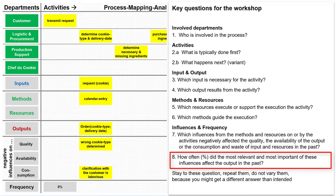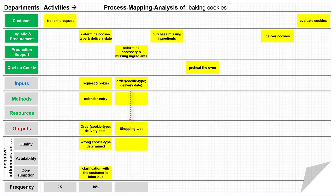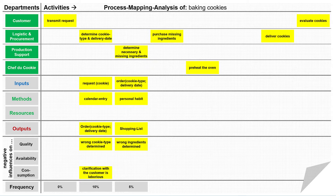I ask the last question for this activity: how often did the most relevant of these influences affect the output in the past? Participants estimate the frequency of clarifying a request at 10% of cases. We switch to the third activity: determine necessary and missing ingredients, which transforms the order for cookie type and delivery date into the shopping list. My question about the methods leads first to amazement, then to the statement that every employee follows their personal habits. So I write personal habit as the method. Personal habits lead to variability in the activity and thus in the output. The negative influence — wrong ingredients determined — is estimated at a frequency of 5%, and its impact on the taste of cookies and thus our first problem is obvious.